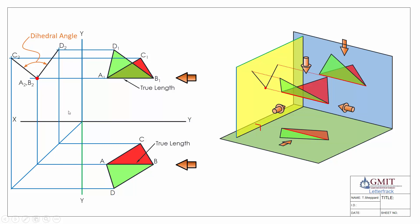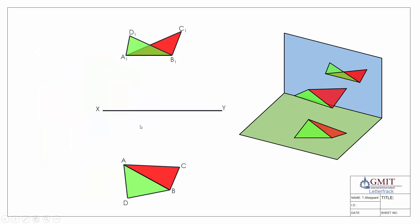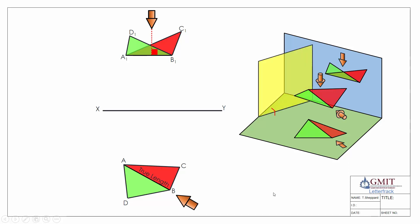Our second example is very similar, except here we don't have a true length of our line of intersection in both views. Only when we look from above in the plan view do we see it as a true length. So we project our auxiliary from the plan view this time — projecting an auxiliary elevation. We draw the X1Y1 line perpendicular to our line of sight, which is perpendicular to the true length line, and project our line of intersection and the two surface points onto that plane to give us the edge view of the surfaces and the point view of the line of intersection.